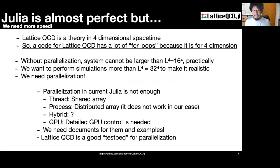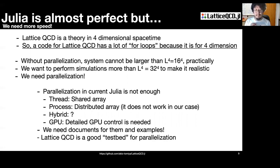However, this is not enough. Lattice QCD is a theory in four-dimensional spacetime. So a code for lattice QCD has a lot of four-dimensional loops. Without parallelization, the system cannot practically be larger than 16 to the fourth. We want to perform simulations of 32 to the fourth or more to make them realistic, so we need parallelization. We have tried several parallelization approaches in Julia, but none of them works well.